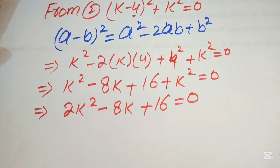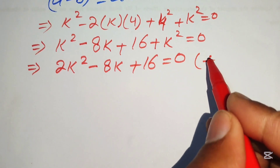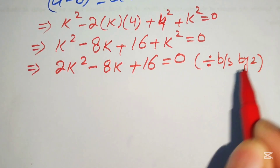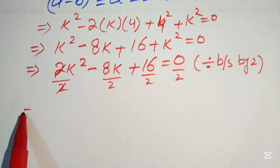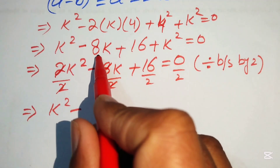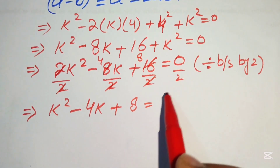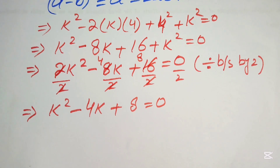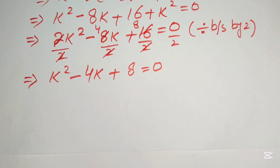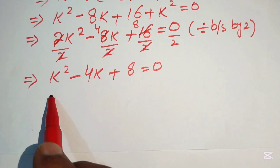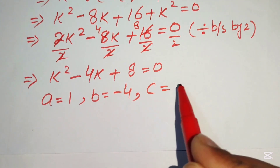Since each term is divisible by 2, we divide both sides by 2 to get k² − 4k + 8 = 0. This is quadratic in k. The coefficients are a = 1, b = −4, and c = 8.